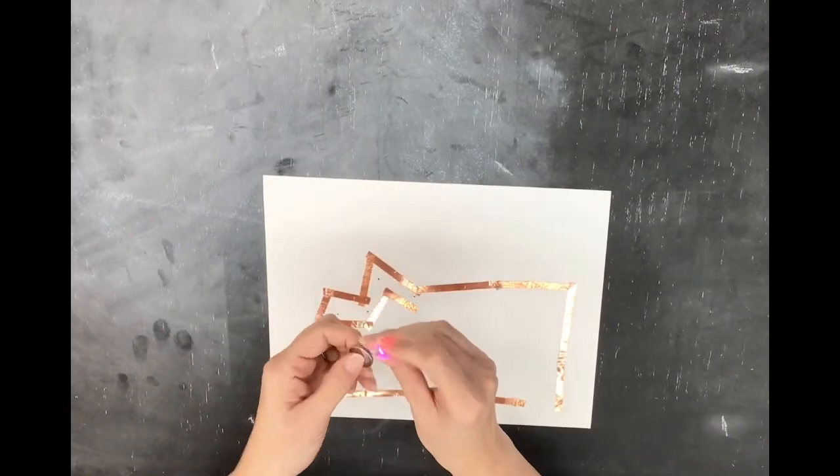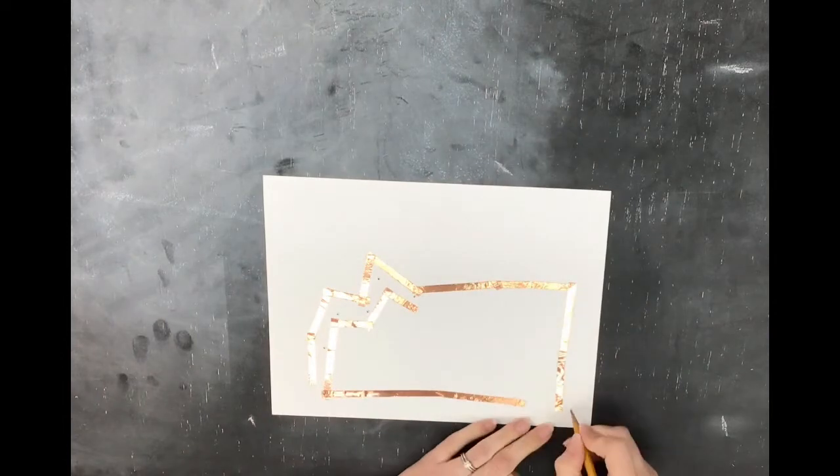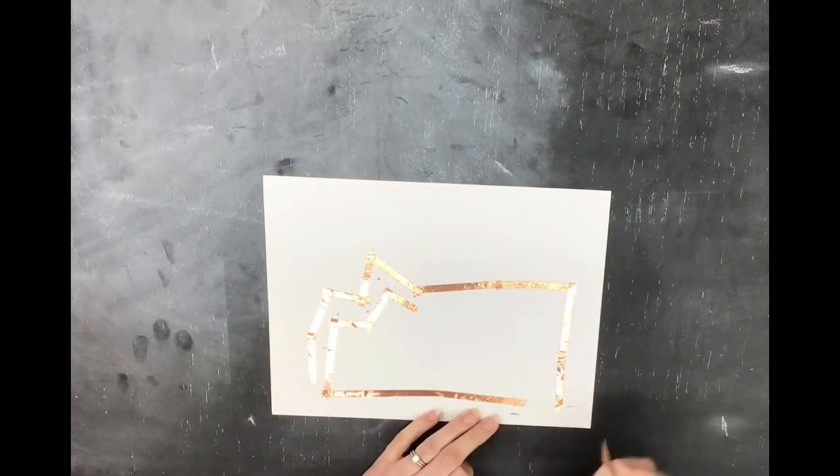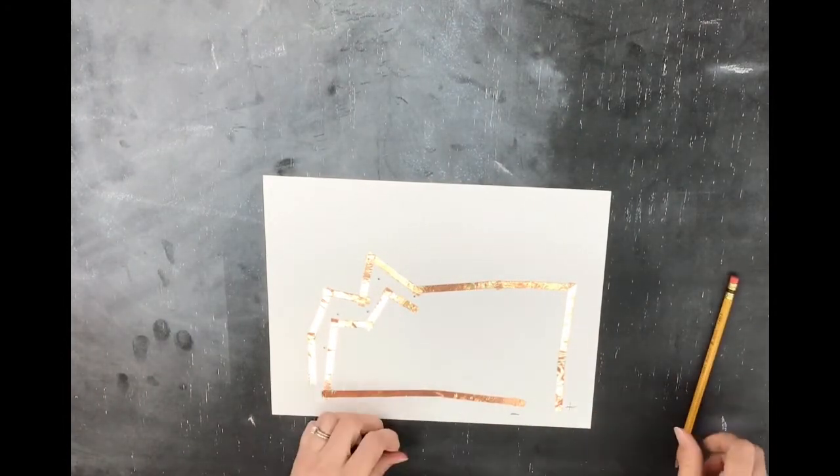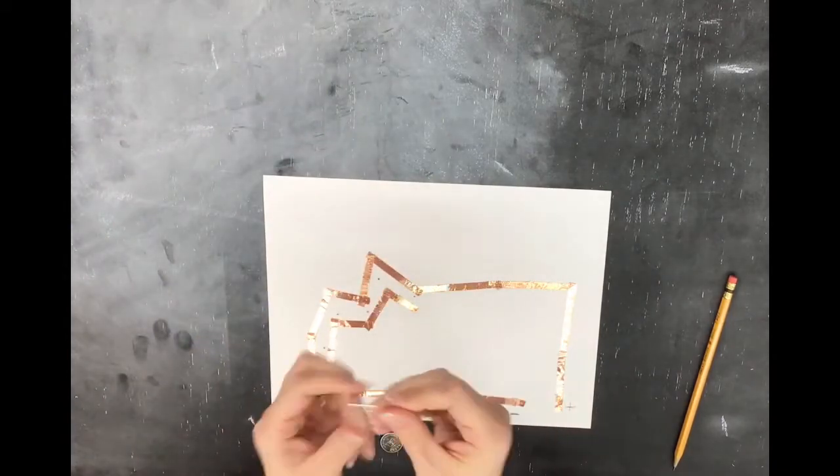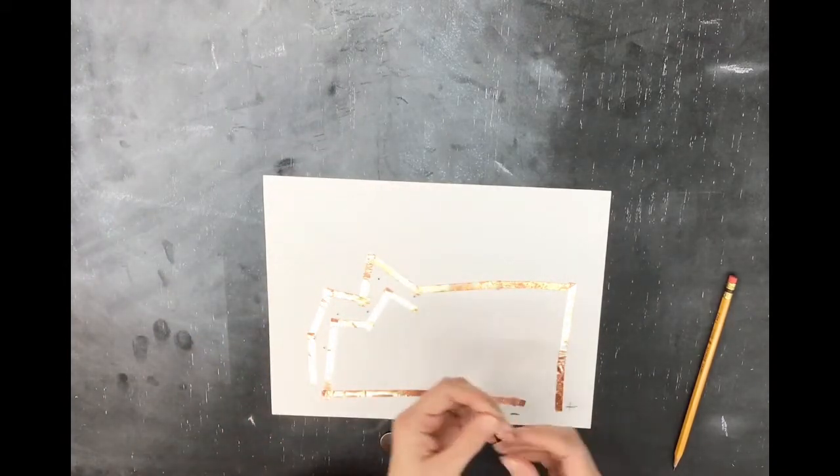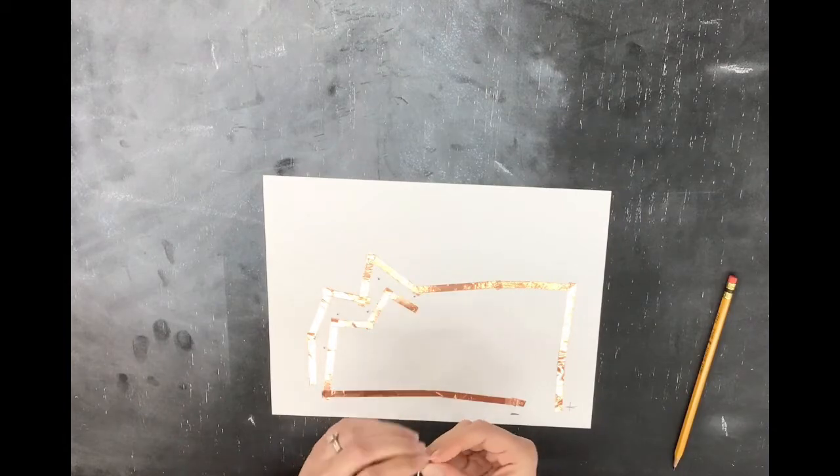Test your battery to see if it is working. Determine which line of the copper tape you want to be positive and which you want to be negative. Mark on the paper. The long leg will be attached to the positive line of tape and the short leg will be attached to the negative line of tape.